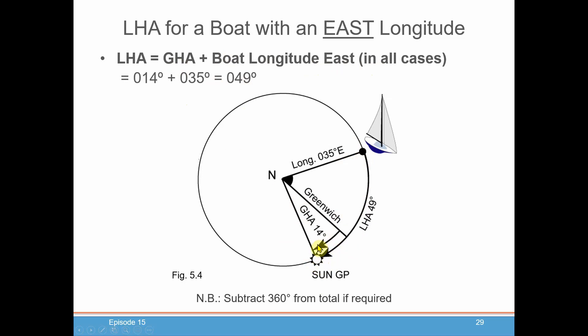The sun is at 14 degrees GHA. The boat is 35 degrees east. We add the two together and we get a complete LHA of 49 degrees. Now in this case, you may add those two together and get a number that's greater than 360 degrees. If that's the case, you'll just subtract 360 degrees from the total to get a number above zero but below 360.